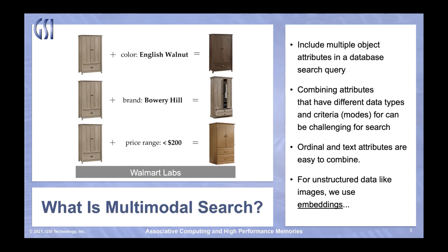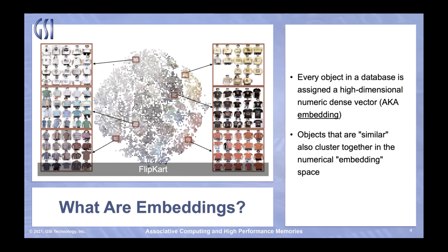This is a great example of multimodal search in an e-commerce context. We have combined different modalities — for example, an image and a keyword — and the result is a combination of the modes. Now, multimodal search can be challenging when the modes have different data types, and this is true here where we have keywords combined with an image. In order to understand how we perform this kind of multimodal search efficiently, we need to first talk a little bit about embeddings.